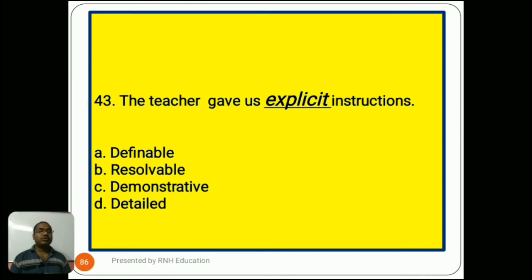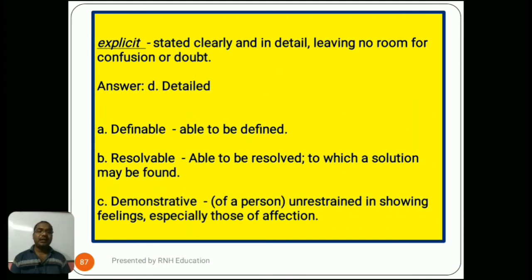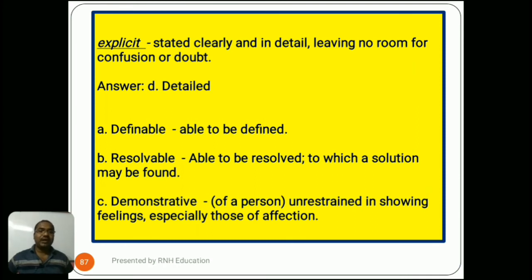Question number 43: 'The teacher gave us explicit instructions.' Options are A) definable, B) resolvable, C) demonstrative, D) detailed. Explicit means stated clearly and in detail, leaving no room for confusion or doubt. The answer is D) detailed. Option A, definable, means able to be defined. Option B, resolvable, means able to be resolved, to which a solution may be found. Option C, demonstrative, means of a person unrestrained in showing feelings, especially those of affection.